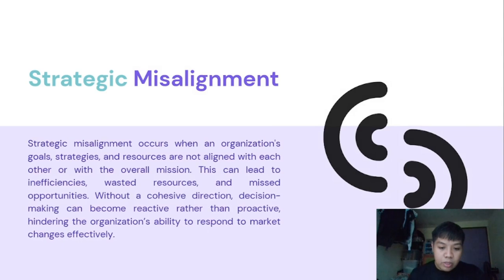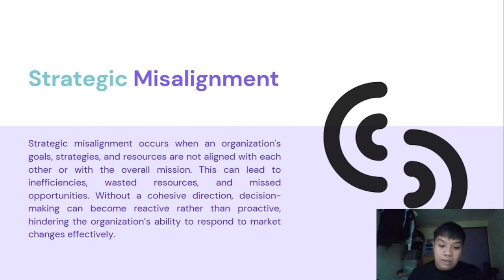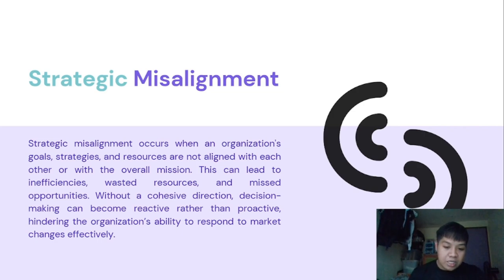If these levels don't work well together, it leads to strategic misalignment. This happens when goals, plans, and resources don't match the organization's mission. Misalignment can cause wasted time, effort, and missed opportunities. It can happen because of poor communication, teams working on conflicting goals, or resources not being used effectively.